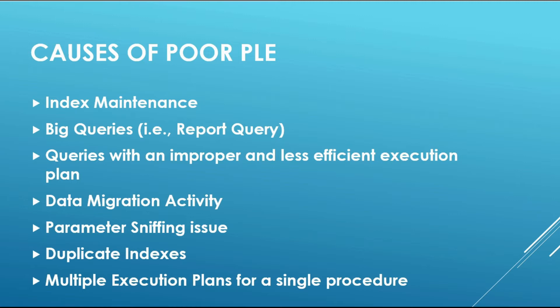The next cause is parameter sniffing issues — if parameter sniffing is turned off, it might lead to a poor execution plan because it tries to select the optimal execution plan before running any query. The next one is duplicate or unused indexes, which can create issues while executing queries and may lead to memory pressure. Finally, if one stored procedure contains multiple execution plans, it increases the number of operations and eventually leads to poor PLE.